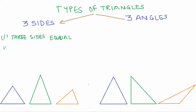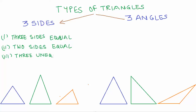The second case is two sides equal in length, where the third side is of a different length. And the third case would be three sides that are unequal — not of the same length. These three cases are precisely what we use to classify triangles based on their sides.